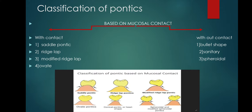In saddle pontics, the gingival curvature is concave and overlaps the ridge both buccally and lingually, resembling a saddle shape. It has two contacts — one buccal and one lingual. Maintaining a saddle pontic is very difficult because food accumulation occurs and cannot be avoided, as it is closely adapted to the gingiva.